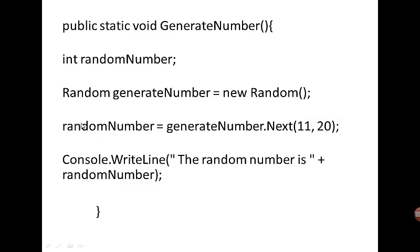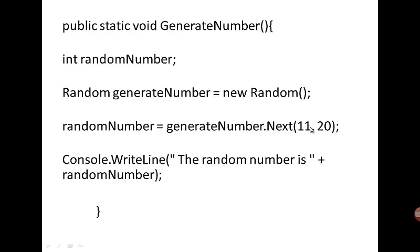So: Random generateNumber equals new Random. Then this line actually generates a random number. In this case, it's going to generate a number between 11 and 20. If I want it to generate a number between 1 and 10, I will put a 1 here and an 11 here. This will assign that number to the variable randomNumber, and this line writes it out to the screen.